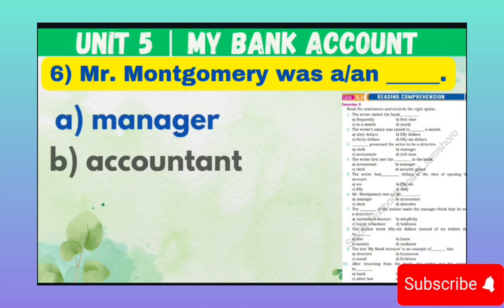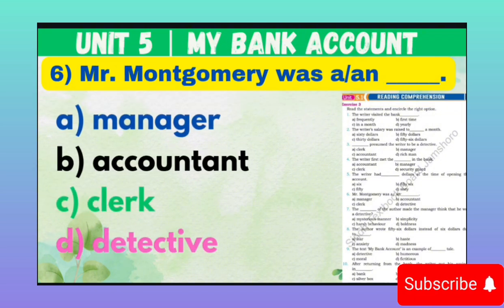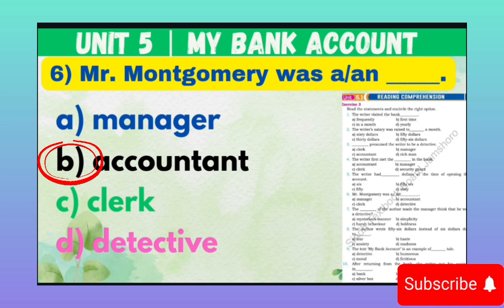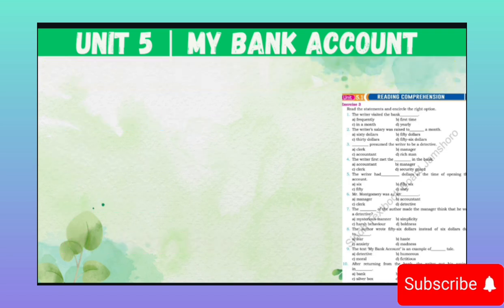MCQ number 6: Mr. Montgomery was in a blank. It means Mr. Montgomery kya the. Option A: Manager. Option B: Accountant. Option C: Clerk. Option D: Detective. Correct option is B — Accountant.